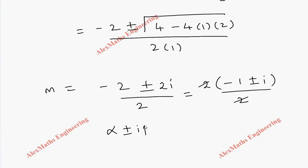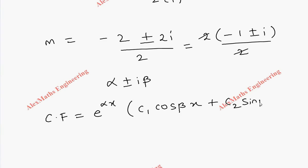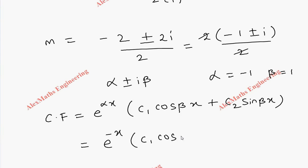So alpha is minus 1 and beta is 1. The complementary function is e^(αx)(c1 cos βx + c2 sin βx). By substitution we get e^(-x)(c1 cos x + c2 sin x).